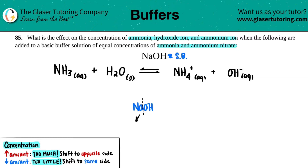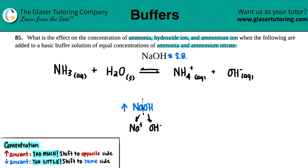You have Na⁺ and you have OH⁻. So in essence, if you're increasing the amount of NaOH, we know that we're going to be increasing the amount of sodium Na⁺ and the hydroxide ion.